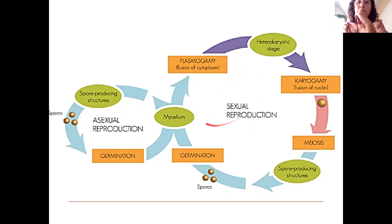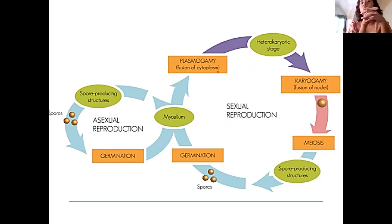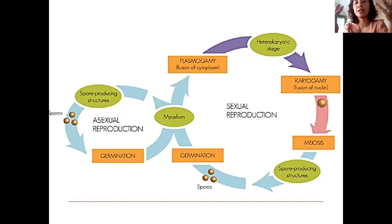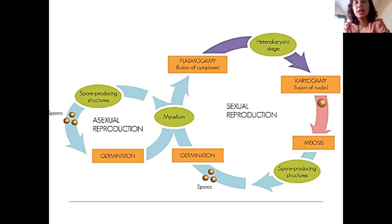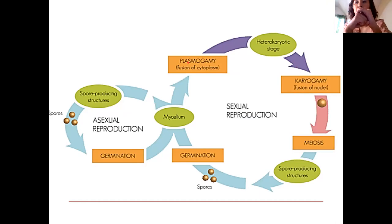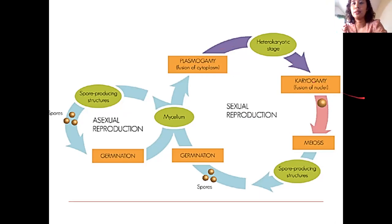For sexual reproduction, there are two parts: plasmogamy and karyogamy. There is no male or female in fungi — instead we have positive and negative types. In plasmogamy, only the cytoplasm fuses — the nuclei remain distinct, forming a dikaryotic cell with two nuclei. In karyogamy, the nuclei fuse, forming a diploid zygote where the chromosomes are doubled. After karyogamy, the cell can form spores through meiosis and spread.